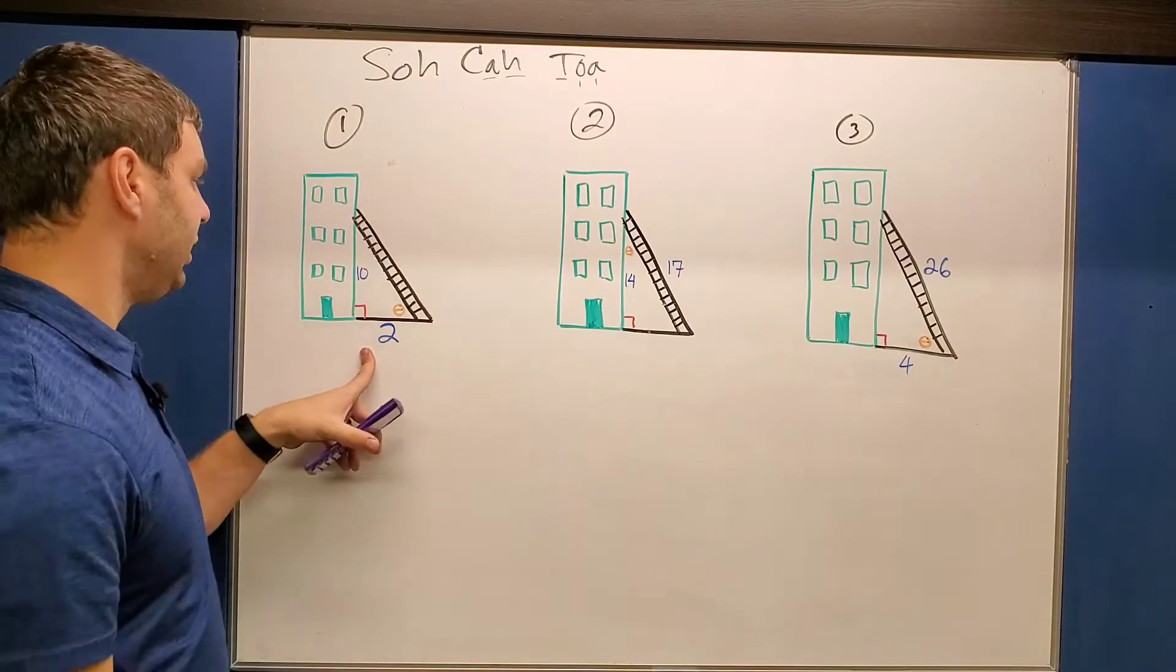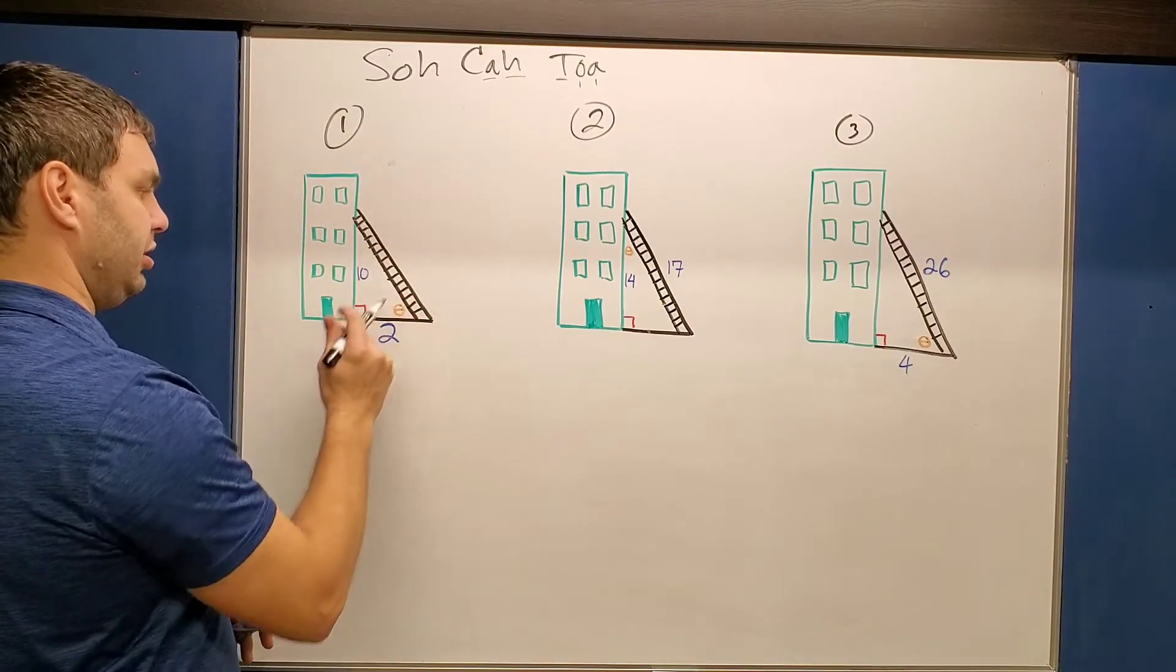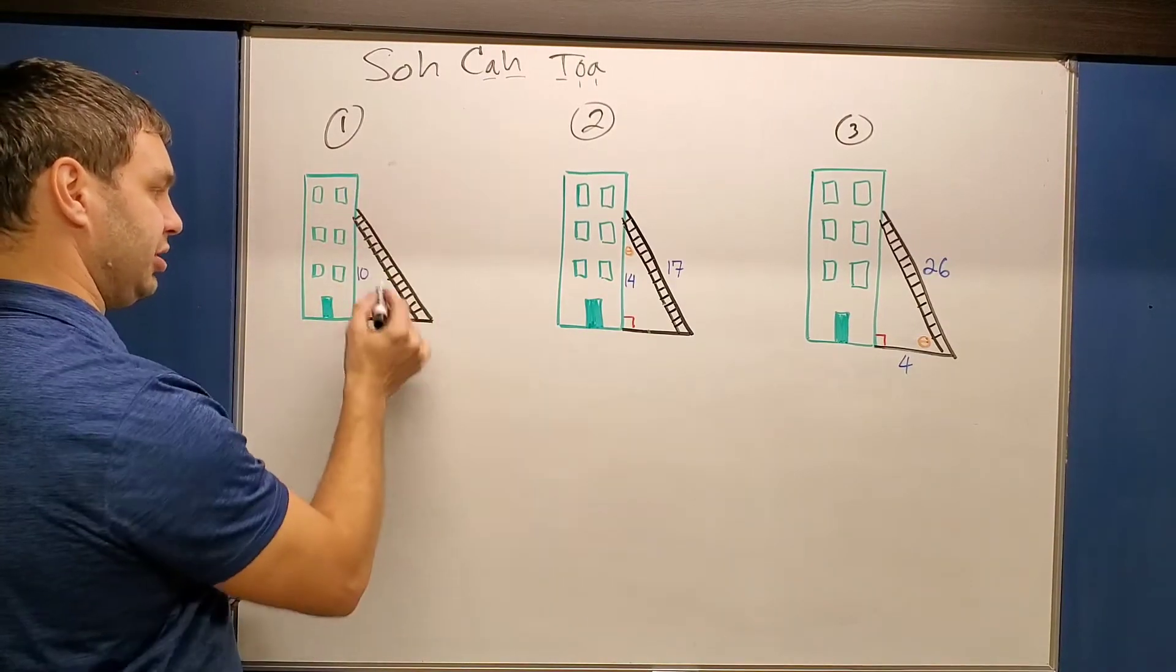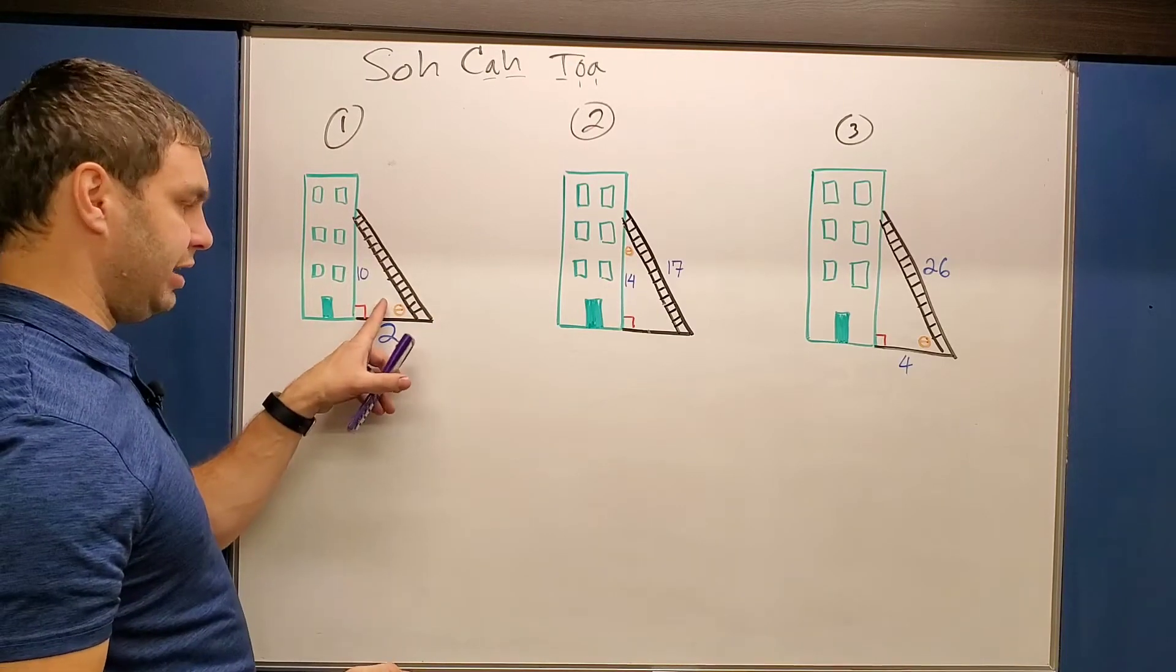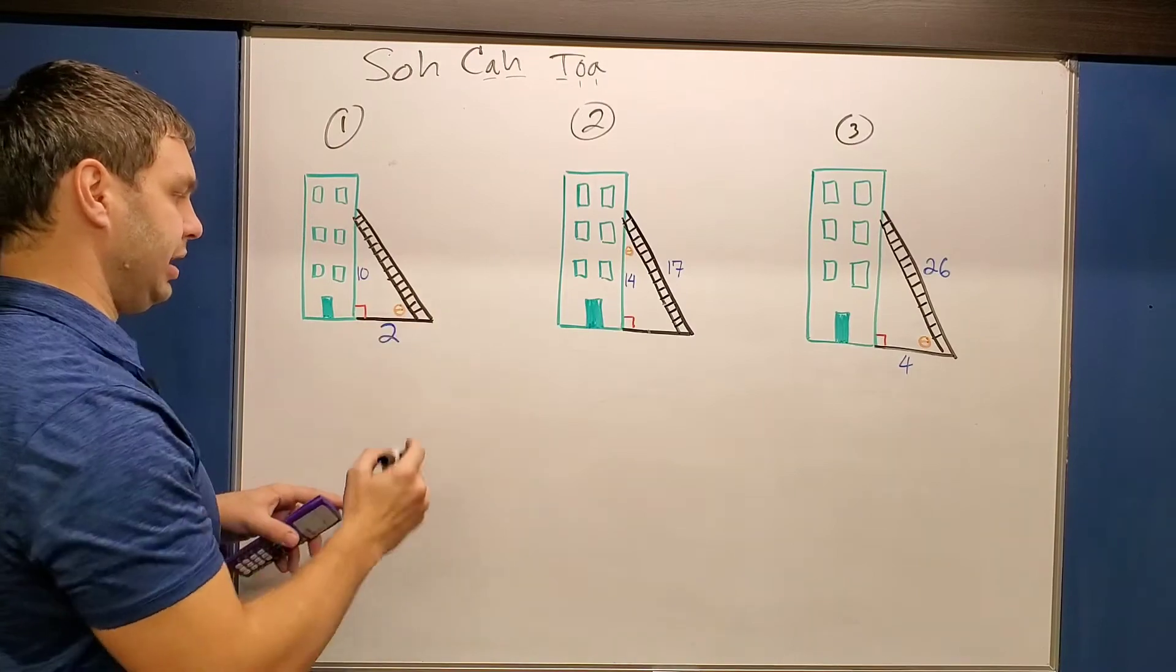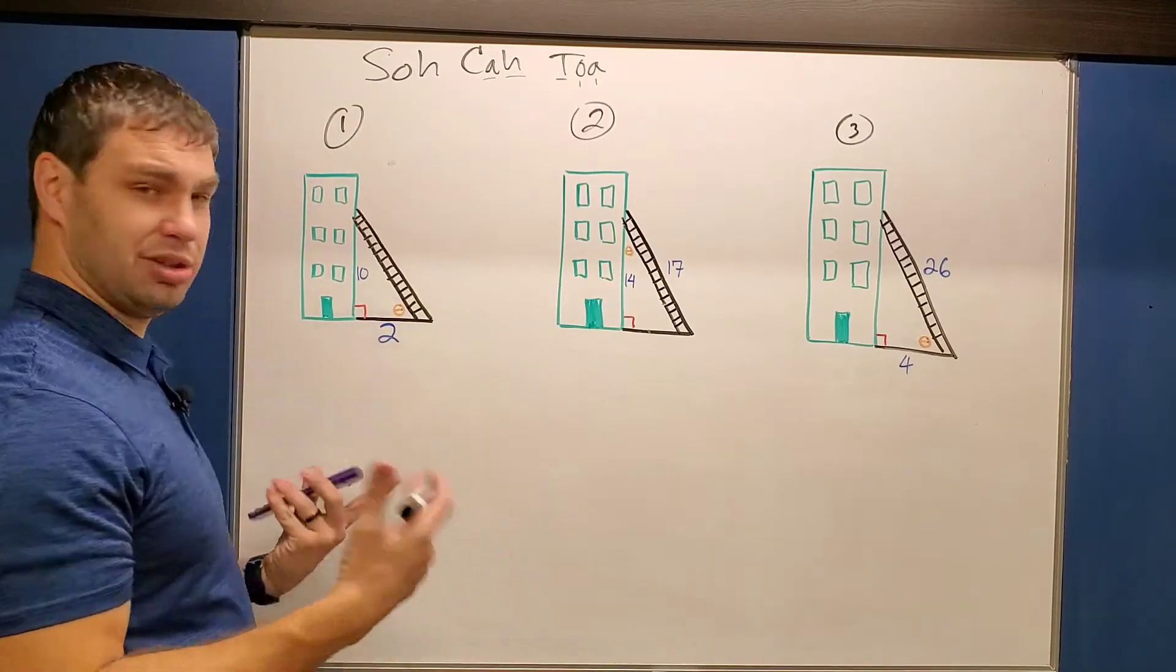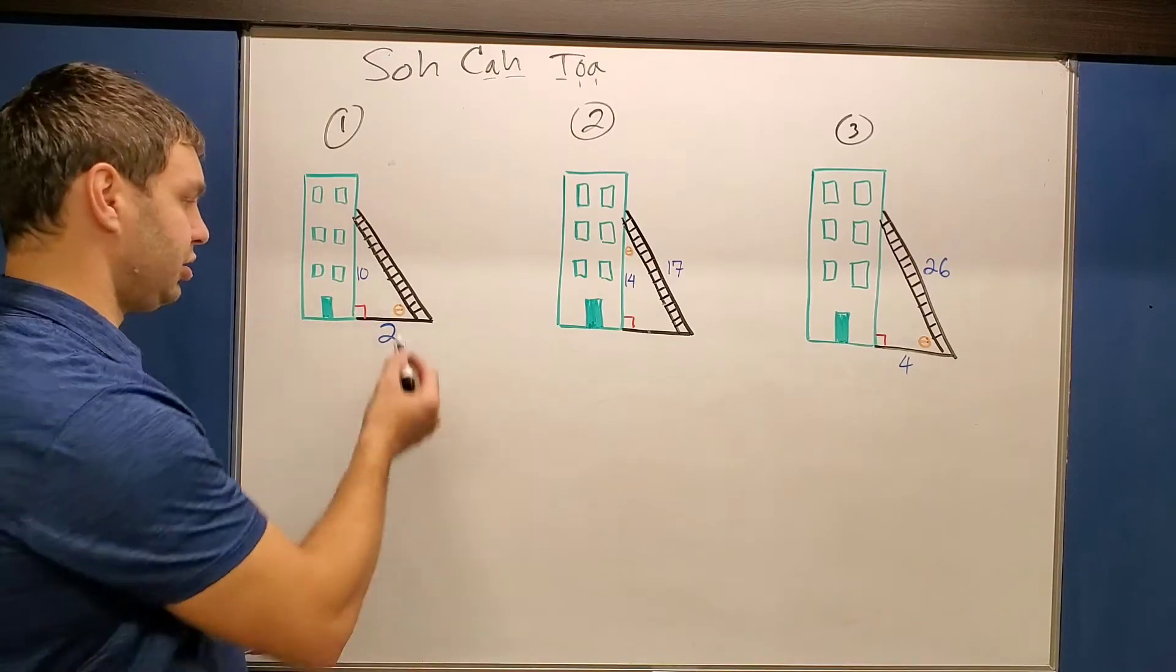This first one, it looks to me like I'm given these two side lengths. I have this bottom one and the portion that the ladder goes up the building, which is 10. I'm trying to find the angle that's made between the ground and the ladder right here. And on mine, on all these, they're called theta. That's just a Greek letter. You can call it X, you can call it whatever you want, but we're going to solve for that angle.